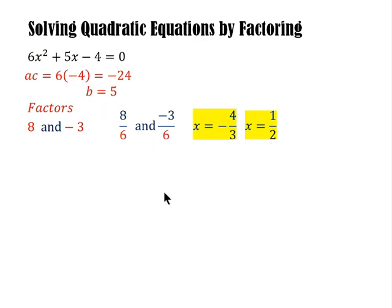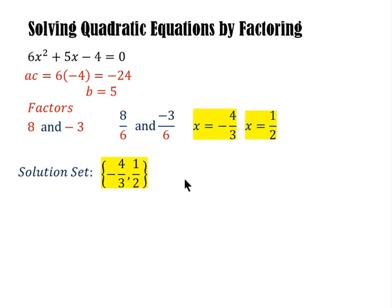Changing the signs: x equals negative 4 thirds and x equals positive 1 half. So the solution set is negative 4 thirds and 1 half. The technique is: find ac for the product, use b for the sum, find the two factors, divide by the coefficient of x squared, and change the sign. That gives you the solution set.